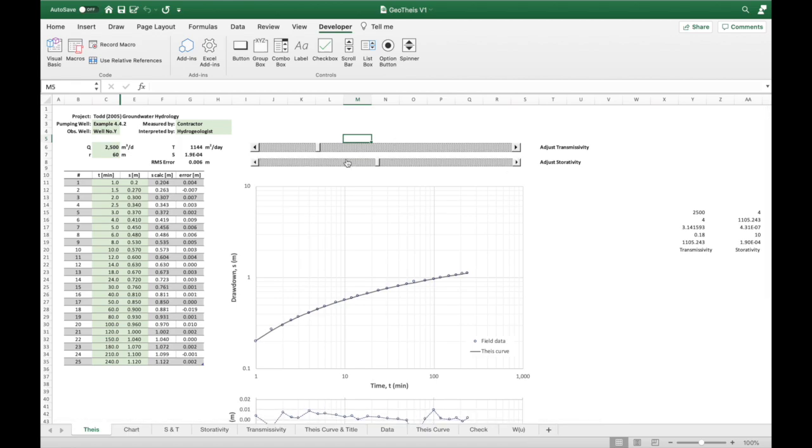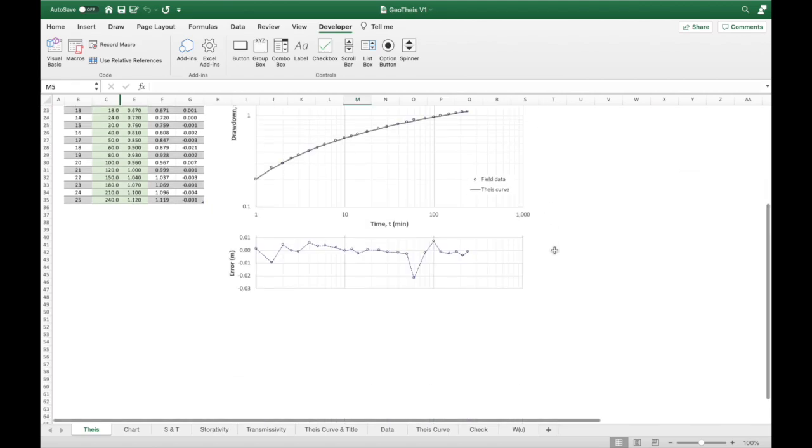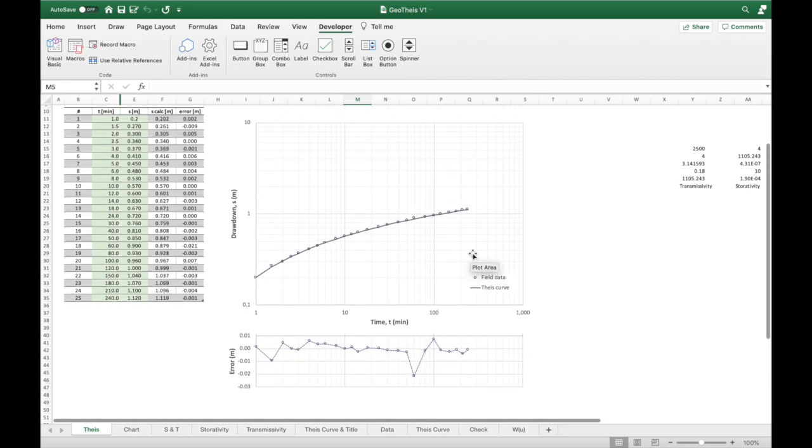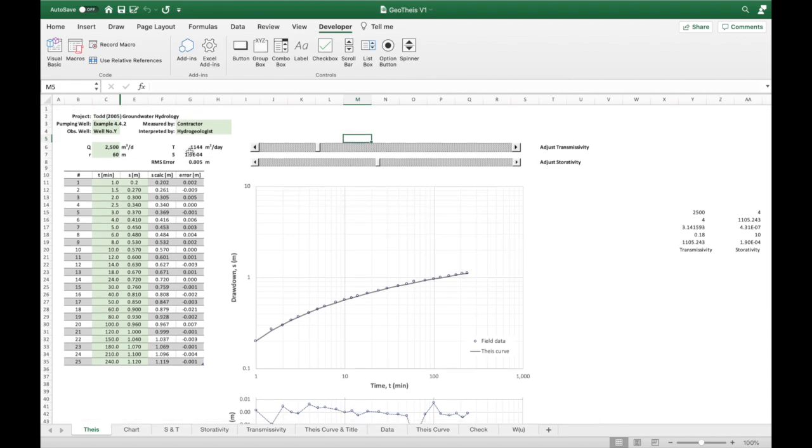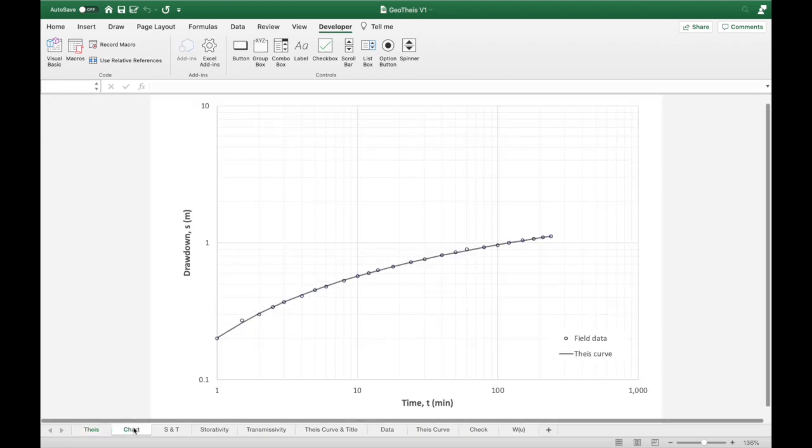When we're quite close to the perfect number, we can have a look at our RMS error. That's a fairly good fit. You can see most of the data is on the type curve. And we have a transmissivity of 1,144 and a storativity of 1.9 times 10 to the minus 4. You can have a look at the chart. That's not a bad fit.